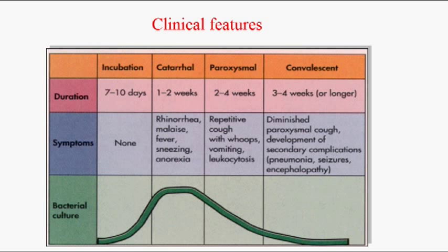Clinically, the infection occurs in three stages: catarrhal stage, paroxysmal stage, and convalescent stage. The incubation period is seven to ten days. After incubation, the catarrhal stage lasts one to two weeks, with symptoms of rhinorrhea, malaise, fever, sneezing, and anorexia. If untreated, the patient enters the paroxysmal stage, lasting two to four weeks, with repetitive coughing up to 15 times per day with whoops, vomiting, and leukocytosis.